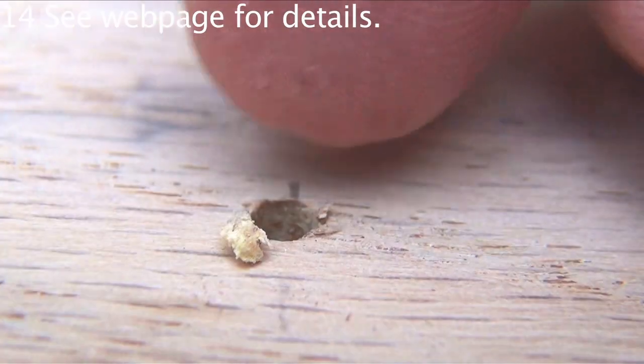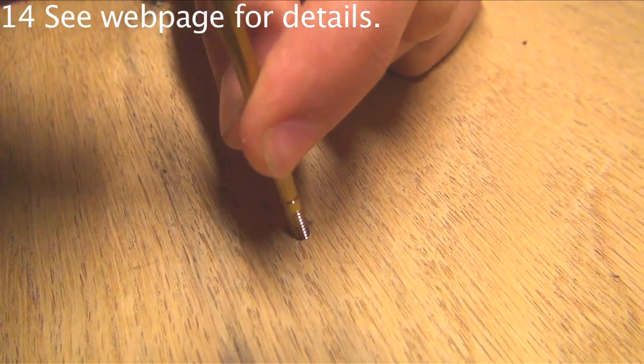If any wood fibers stick up, scratch them with a fingernail until they're flat. Screw in the L's until the groove is close to the board.